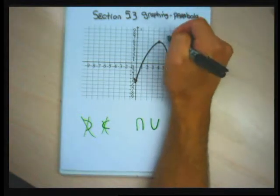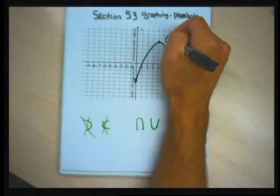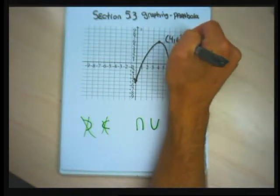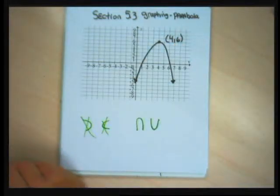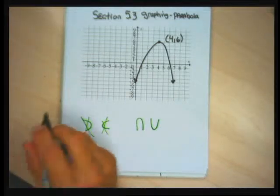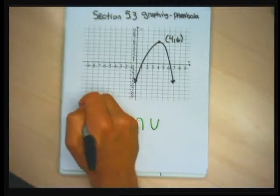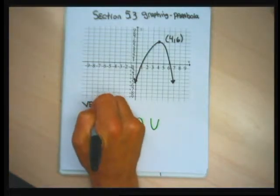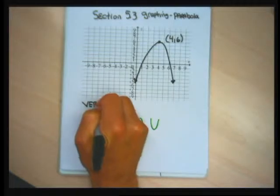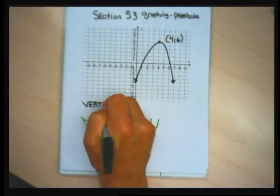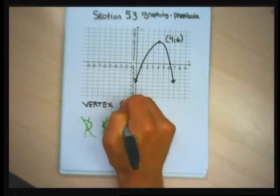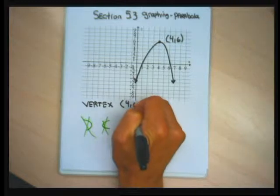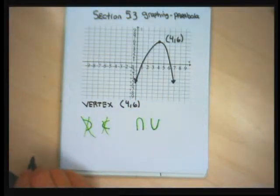The most important feature is where the parabola has its top or its bottom. On this graph I just randomly drew, that's the point (4, 6). We call that point — the bend in the parabola — the vertex. So the parabola I just made up here, we'd say has a vertex of the point (4, 6).